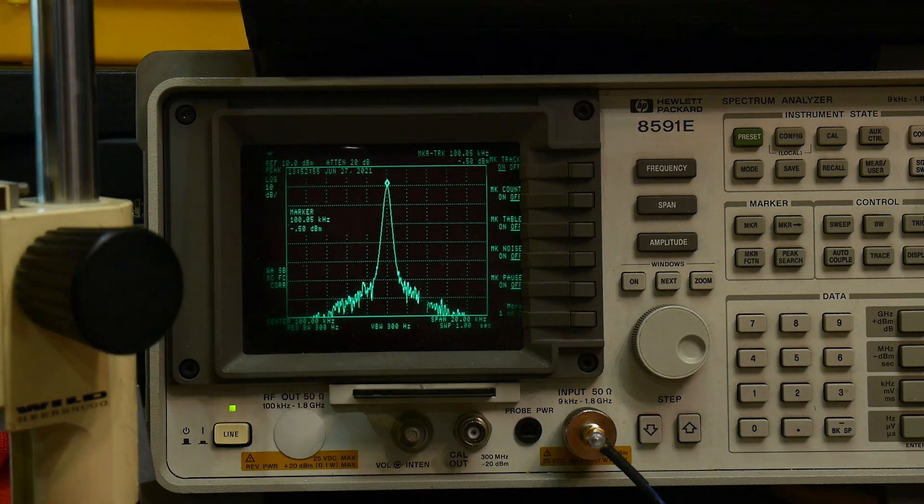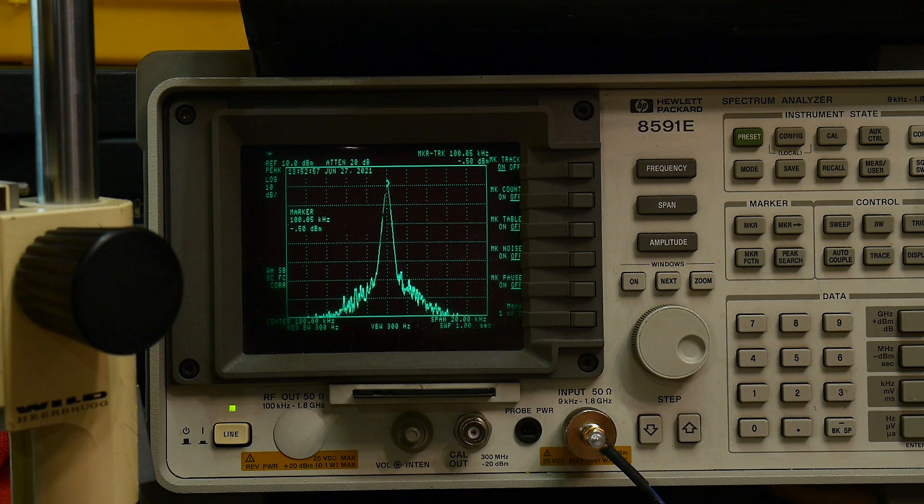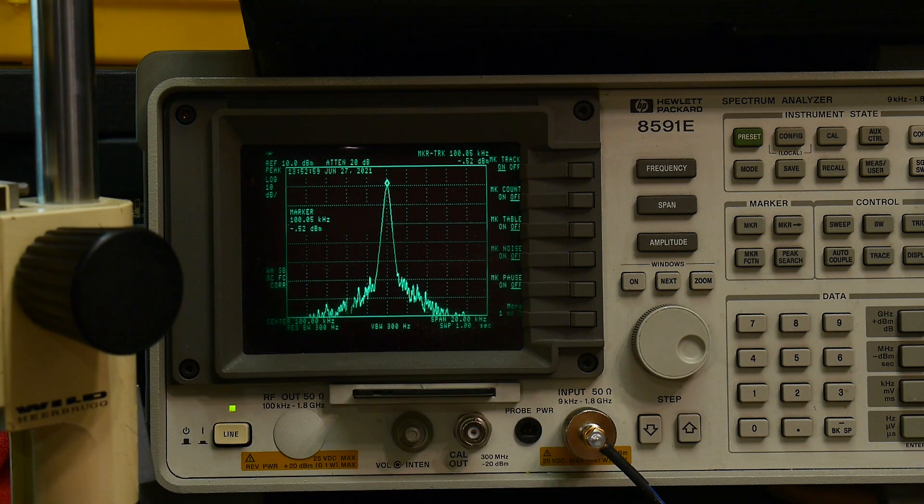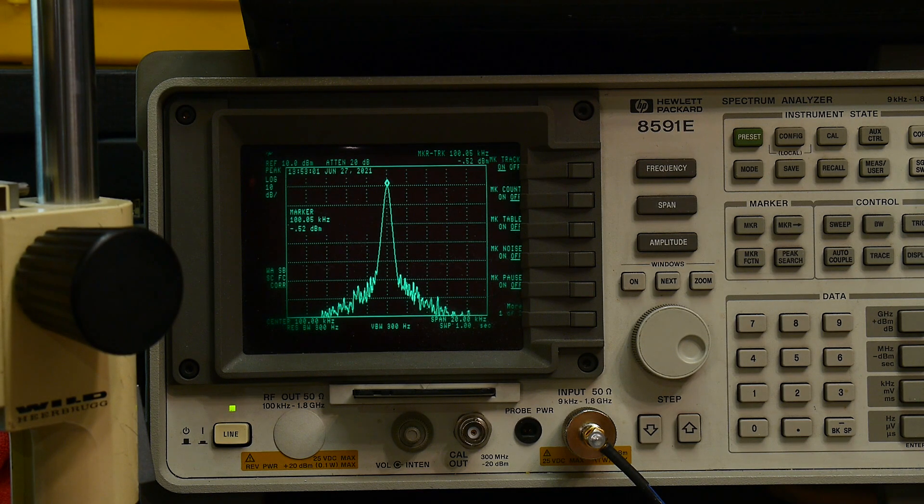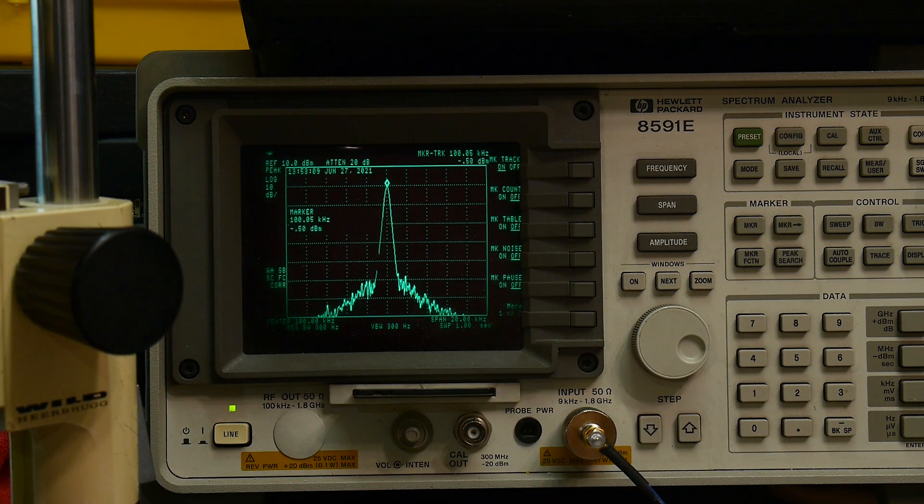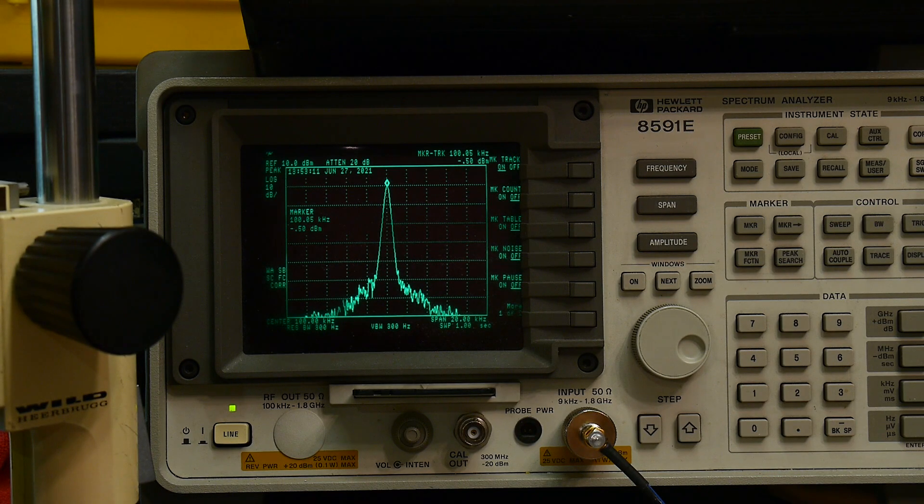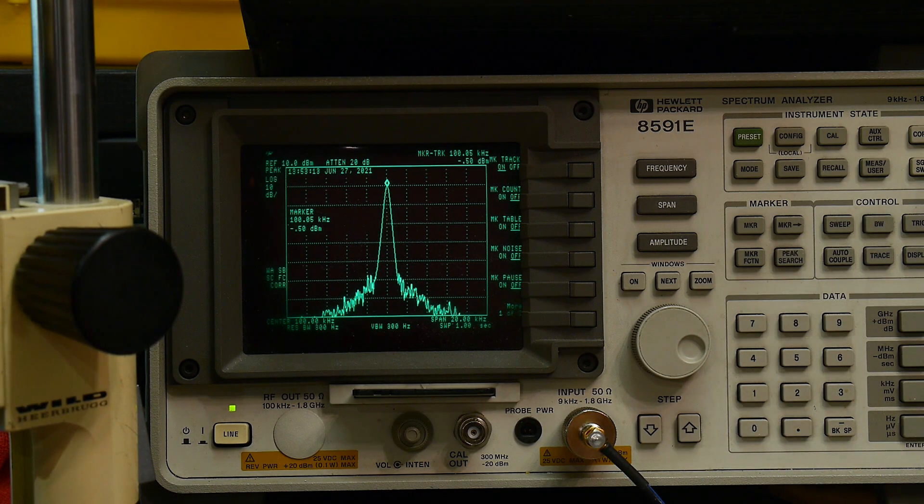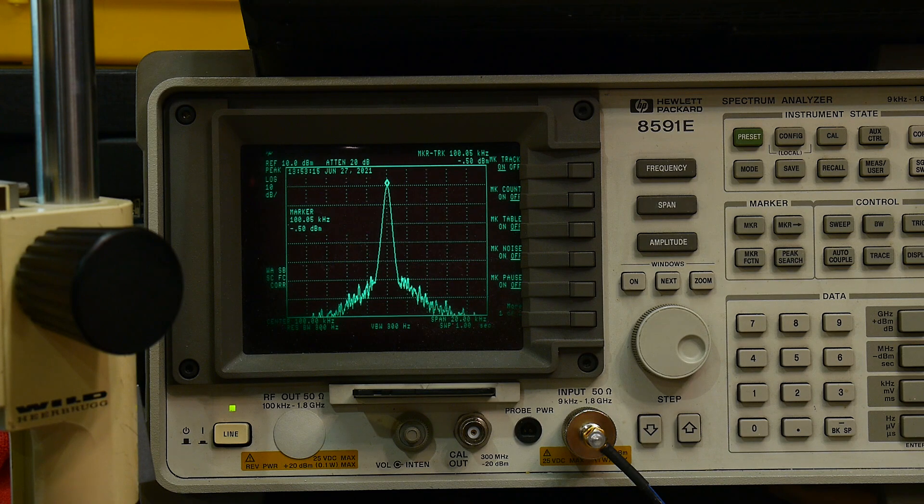I have the spectrum analyzer centered at 100 kilohertz and we have the marker set to track the peak and it's measuring minus 0.5 dBm. So it's a little bit low. Let's see, what else can we measure it with?